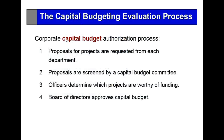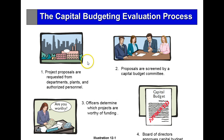We're only going to cover on the test what we talk about in class here. When we're dealing with this authorization process for potential capital budgeting, we're going to get proposals, and there's going to be a big budget committee that determines what is needed and which ones are ultimately going to be funded. The Board of Directors is the one that ultimately approves those capital improvements. Proposals for projects are requested from various departments, screened by a committee, and then the Board of Directors needs to approve those expansions.